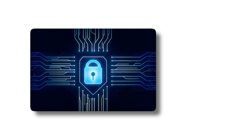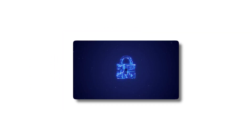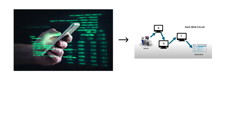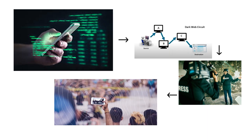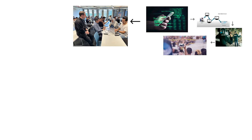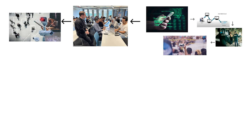This layer isn't malicious — it's protective. Without it, privacy wouldn't exist online. But because it's hidden, it also acts as a gateway, a border between the legal and the unseen. It's where journalists hide their drafts, corporations test unreleased software, and intelligence agencies quietly monitor everything. You can spot this level whenever a website asks you to log in.